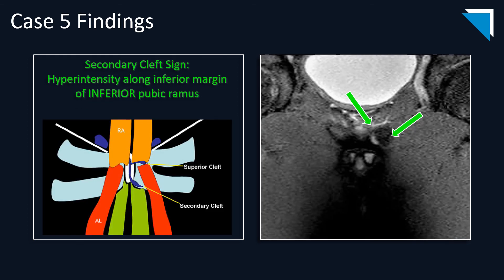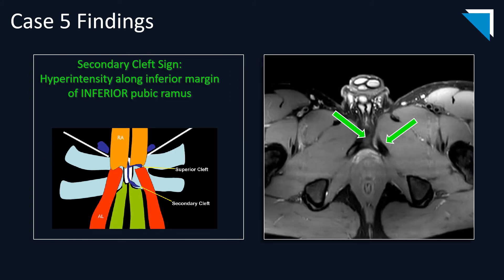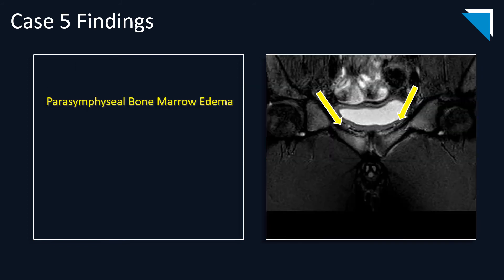A second sign in this case is called the secondary cleft sign — a curvilinear hyperintensity along the inferior margin of the inferior pubic ramus, as seen on the coronal and axial small field-of-view STIR images. As shown on this diagram, you can see both the superior cleft and the secondary cleft sign. You can also see parasymphyseal bone marrow edema.